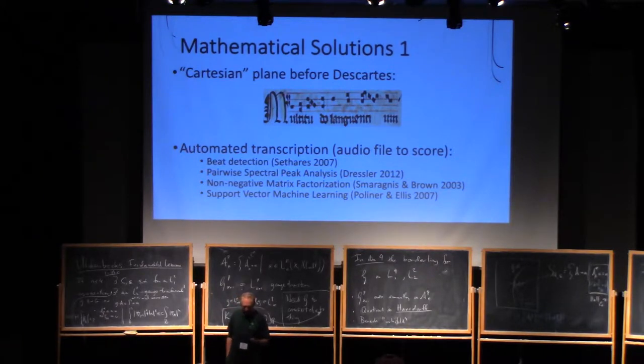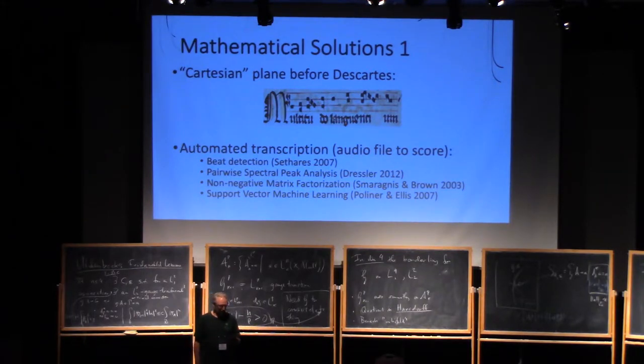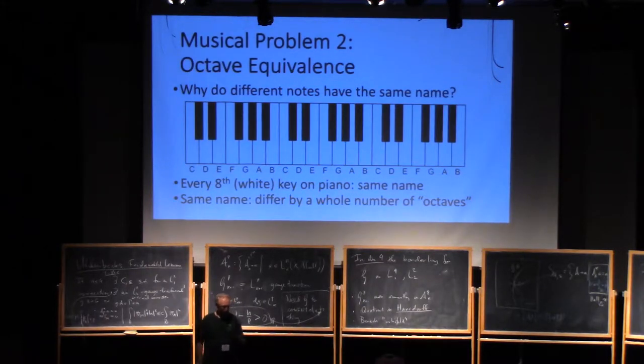Notating music is inherently mathematical. For example, this 13th century manuscript represents musical pitch and time by vertical and horizontal location. The articles listed here, fast-forwarding a little bit, show a variety of approaches to automated transcription.